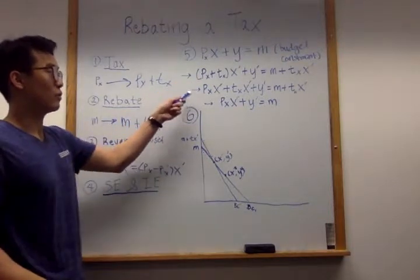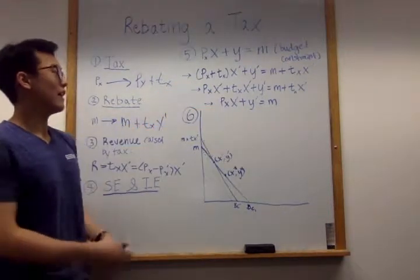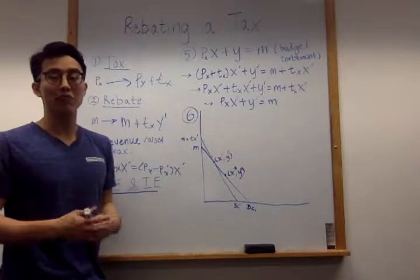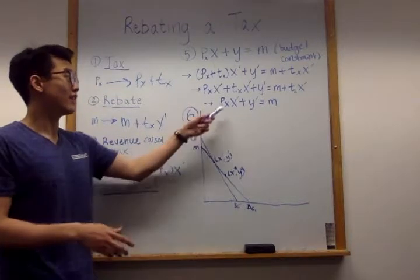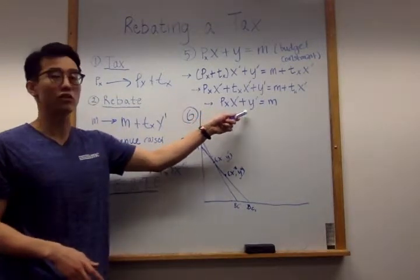And if we multiply this out, we get this equation. And by canceling out TX times X prime from both sides, we get the equation PX times X prime plus Y prime equals M.